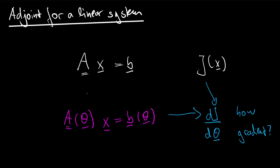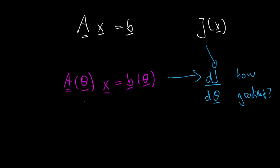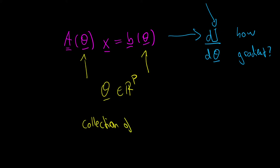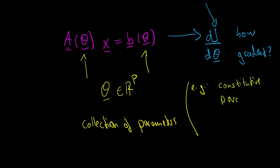Let me put some more context on what we had in the introduction. We have some dependency of our system matrix and the right-hand side on the theta vector — a p-dimensional vector, where p stands for the number of parameters. You can think of it as A depending on the first half of the entries in theta and B depending on the second half. A classical example when discretizing a PDE would be constitutive parameters, which arise in the modeling stage when modeling certain properties of materials.